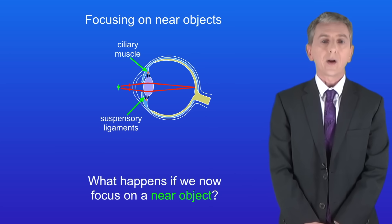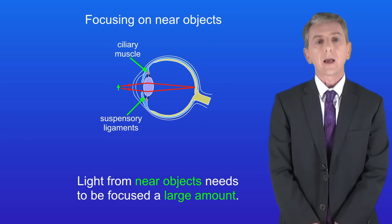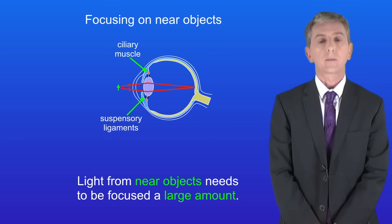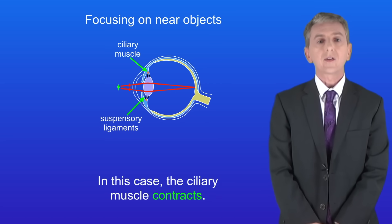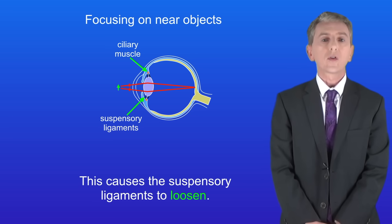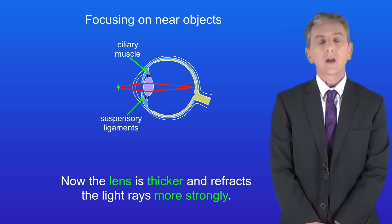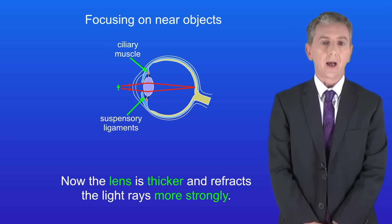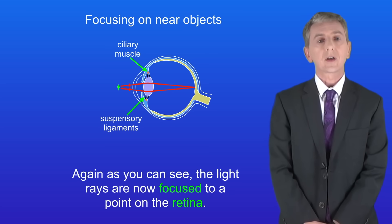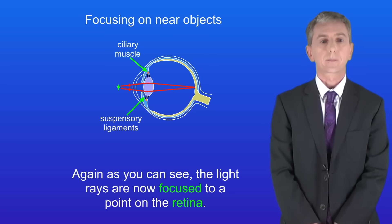When focusing on a near object, light from near objects needs to be focused a large amount. In this case the ciliary muscle contracts, which causes the suspensory ligaments to loosen. The lens is now thicker and refracts the light rays more strongly, and again as you can see the light rays are now focused to a point on the retina.